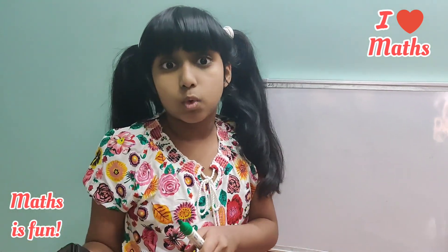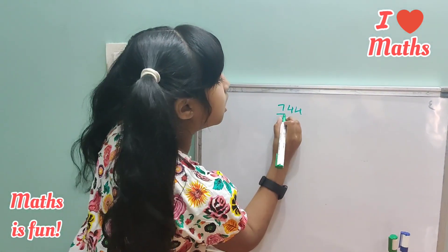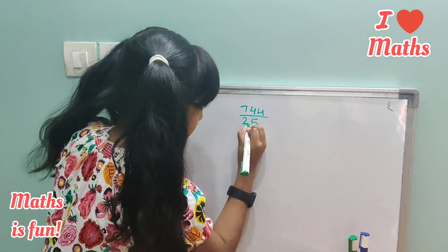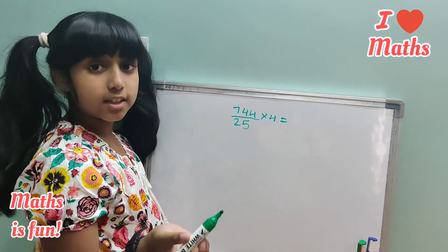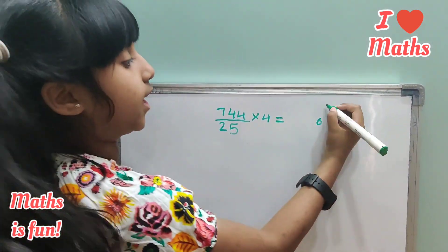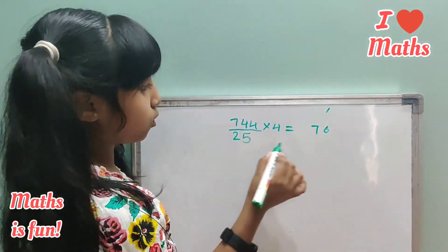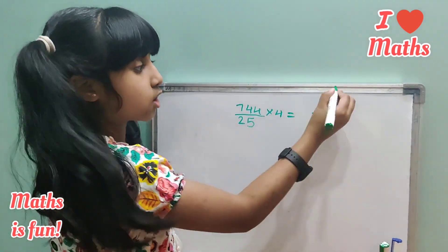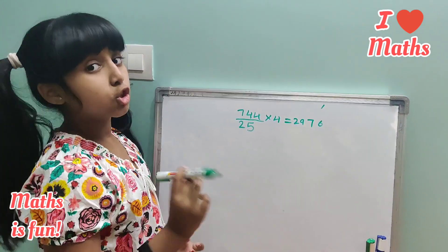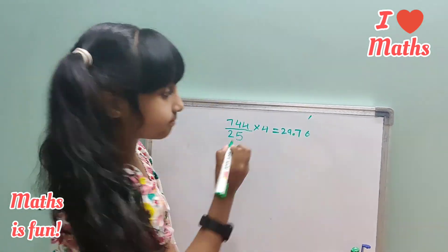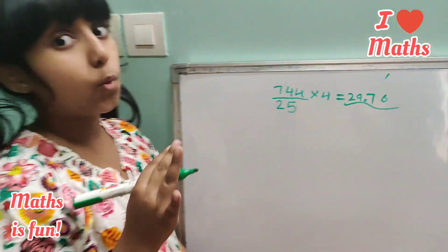Now let's see any number divided by 25. How about 744 divided by 25? What we need to do is multiply by 4. Let's do the multiplication: 4 times 4 is 16, so 6 with 1 carry. 4 times 4 is 16 again, plus 1 carry is 17 — so 7 with 1 carry. 4 times 7 is 28, plus 1 carry is 29. Since 25 is a 2-digit number, we put the decimal mark after 2 digits. The answer is 29.76. You did division without doing division!